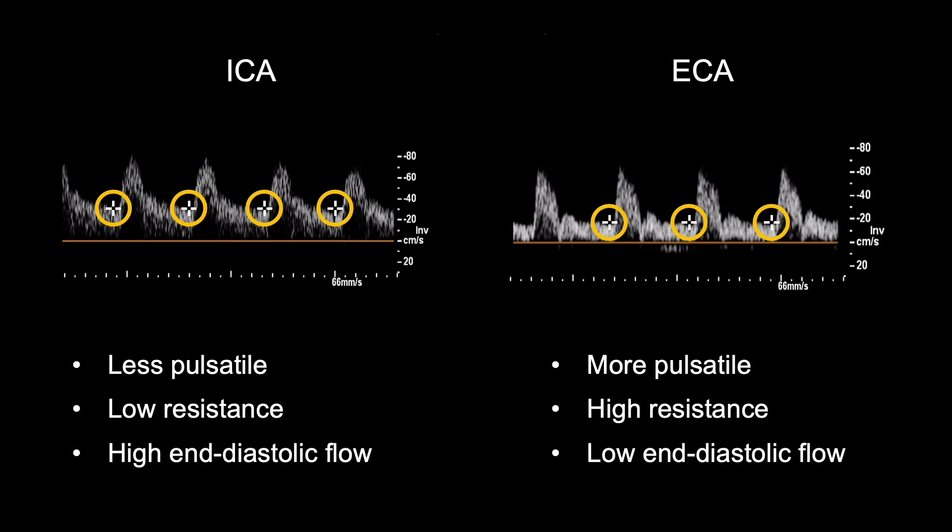The differences in their waveforms are clear, but they also sound very different too. The ICA sounds less pulsatile and more continuous. In contrast, the ECA sounds much sharper, and the pulse is more pronounced. You should learn how to recognise these differences, so don't forget to listen too, because your hearing can be more sensitive.